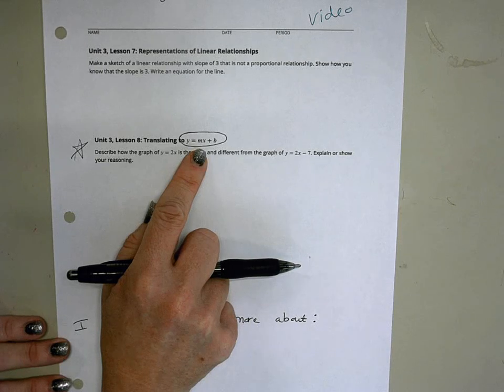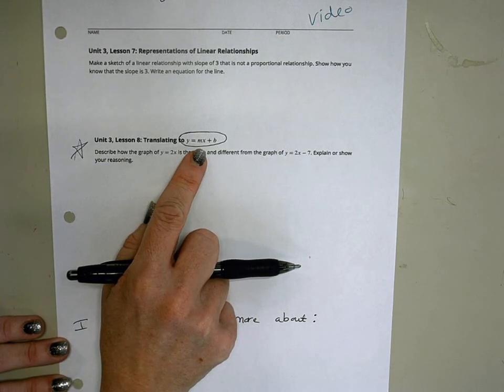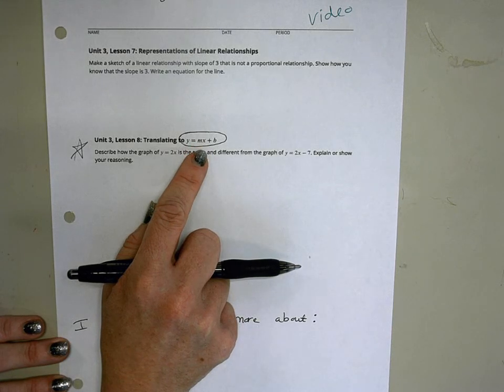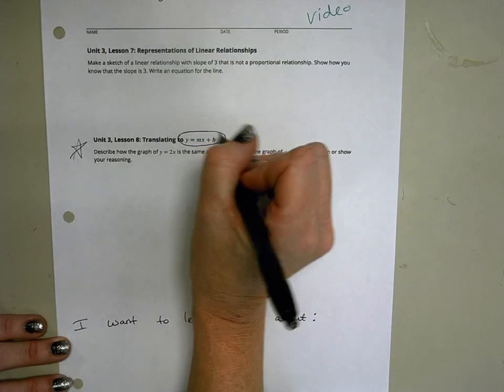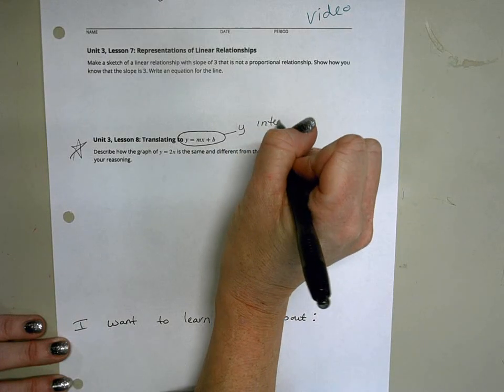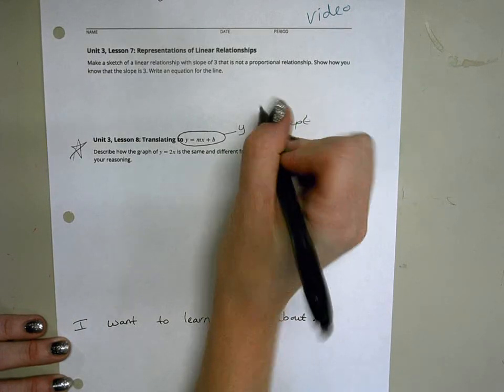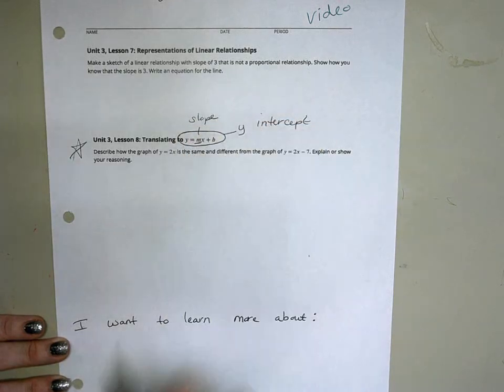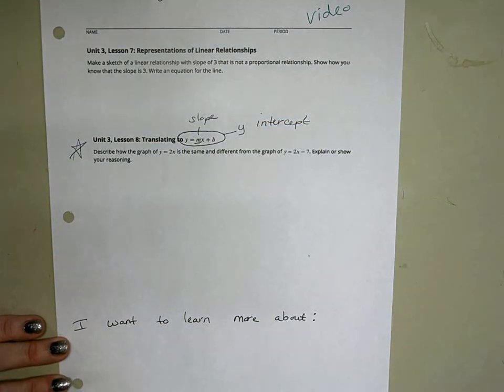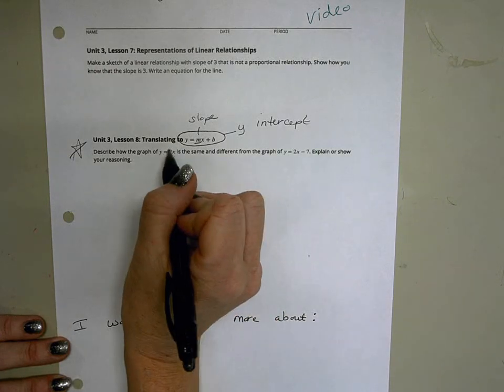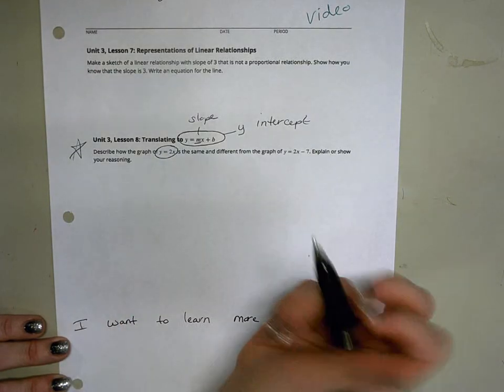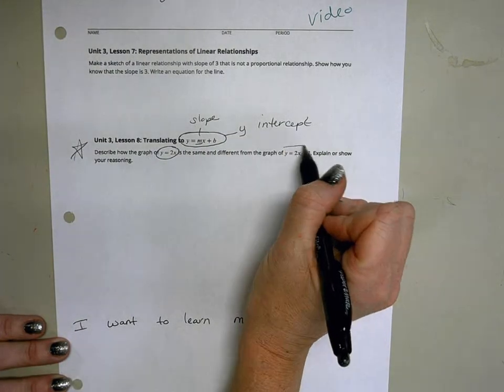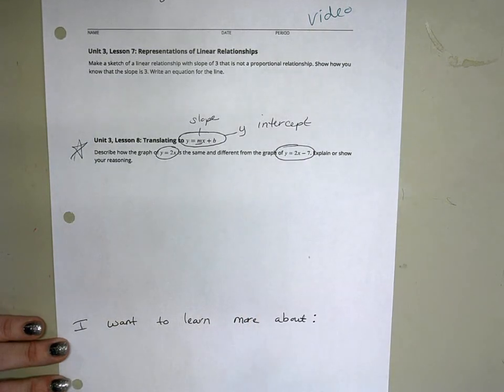So we talked about this equation today - this is a different way to write an equation of a line where B is our y-intercept and M stands for our slope. So the question said to describe why the graph of y equals 2x is the same and different from the graph of y equals 2x minus 7, and explain or show our reasoning.